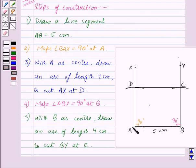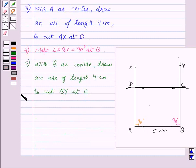And thus, we got the required rectangle ABCD. So, our final, that is, sixth point of construction is, join DC.